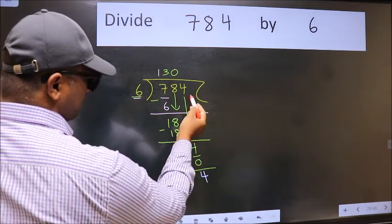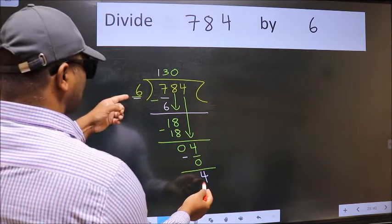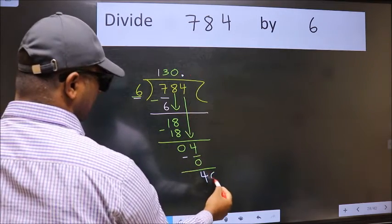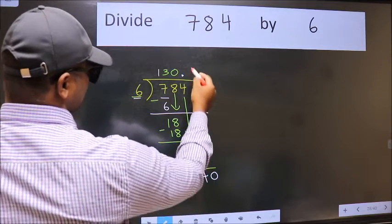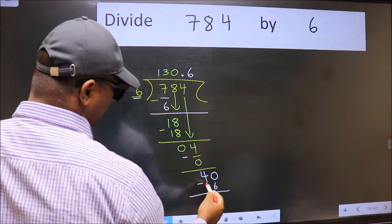Over here, we did not bring any number down. And 4 is smaller than 6. So now we can put dot and take 0. So 40. A number close to 40 in 6 table is 6 times 6, 36. Now we subtract.